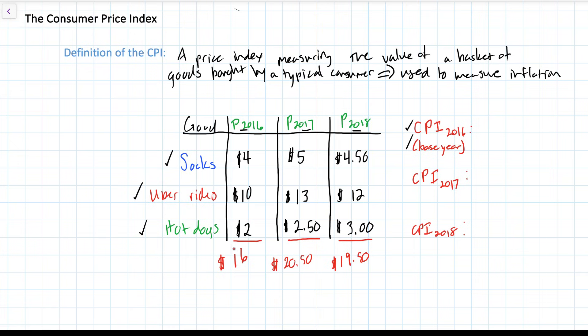What we can do now is calculate the CPIs, or the consumer price indexes, for each of these years. And the formula for the CPI is the price of the basket of goods in one year divided by the price of the same basket of goods in a base year. And since we are talking in terms of indexes, we must multiply this by 100 to get our consumer price index.